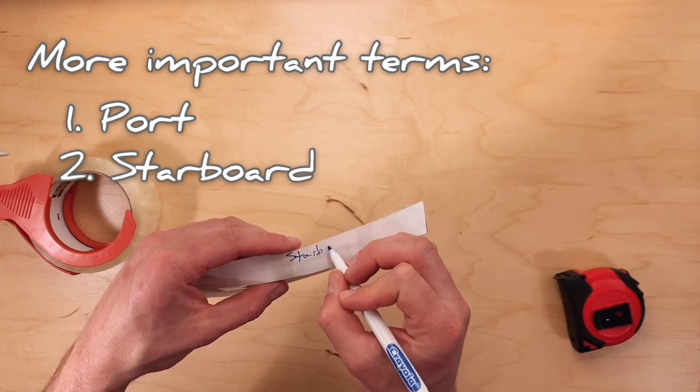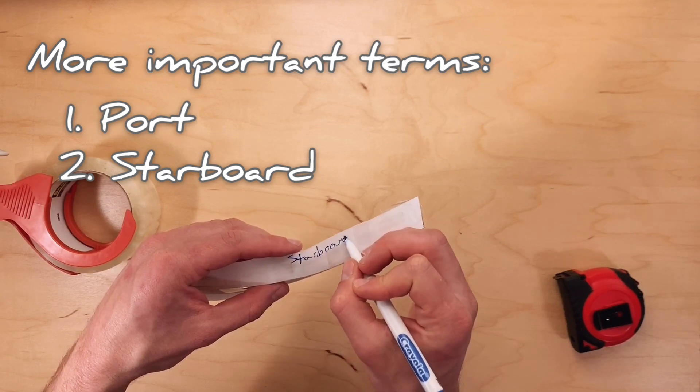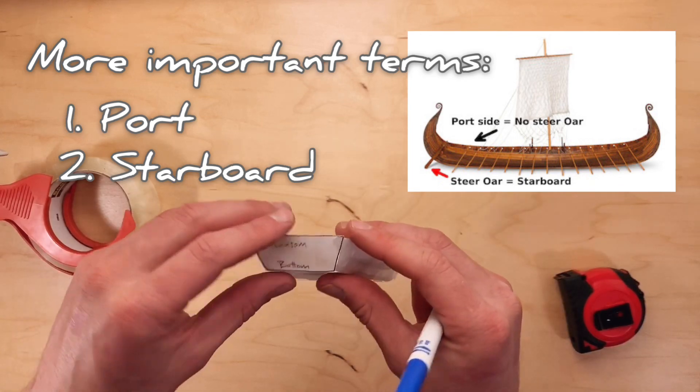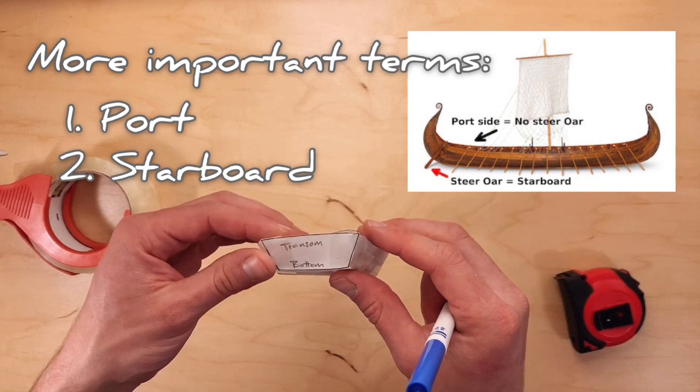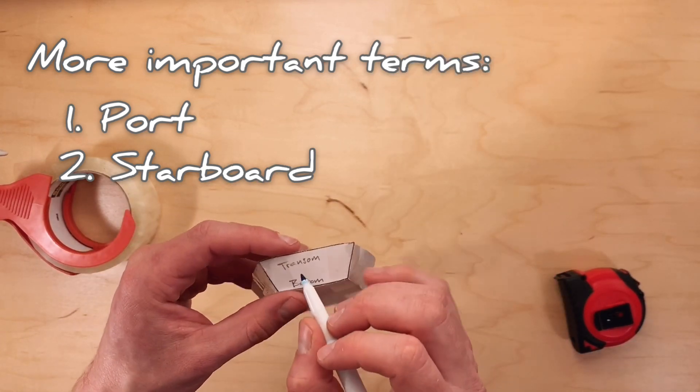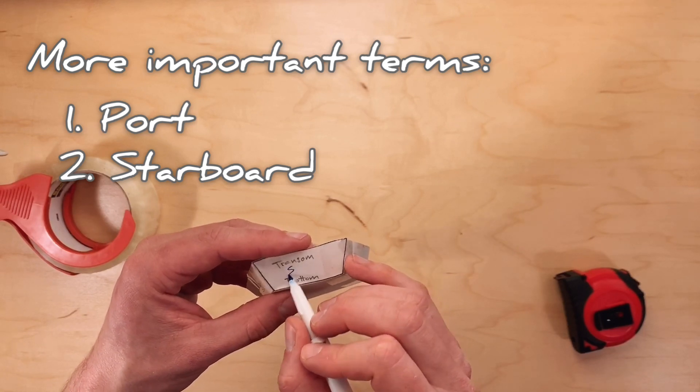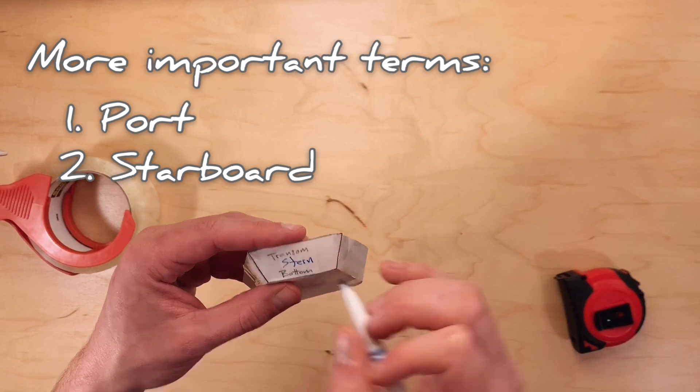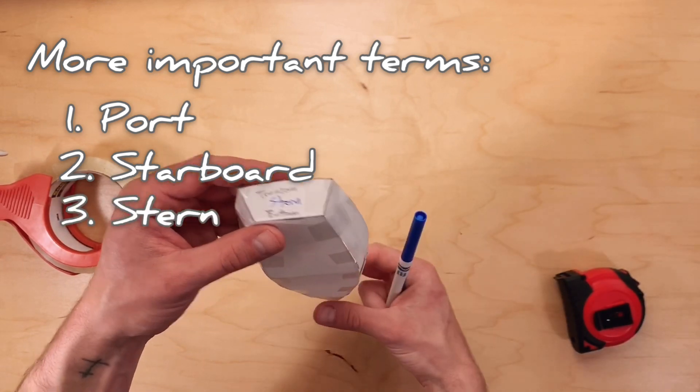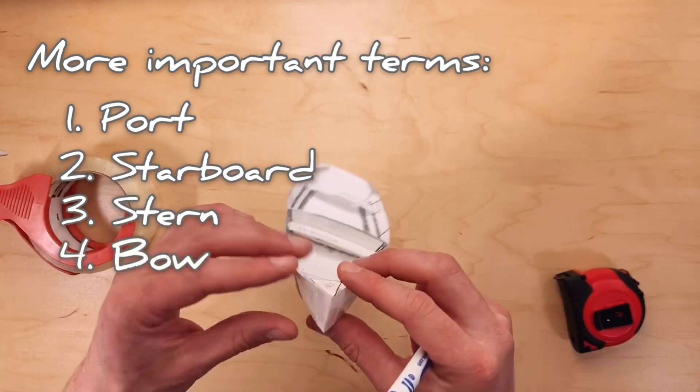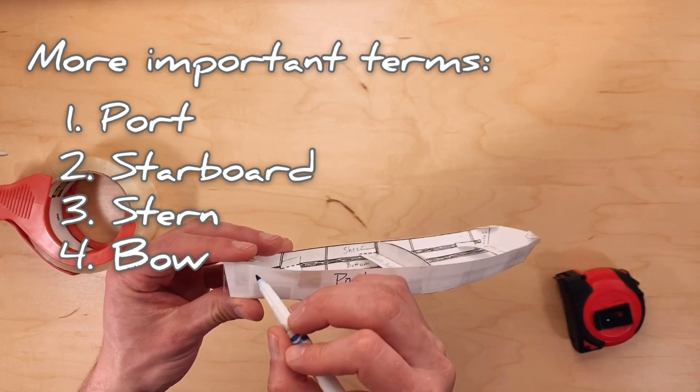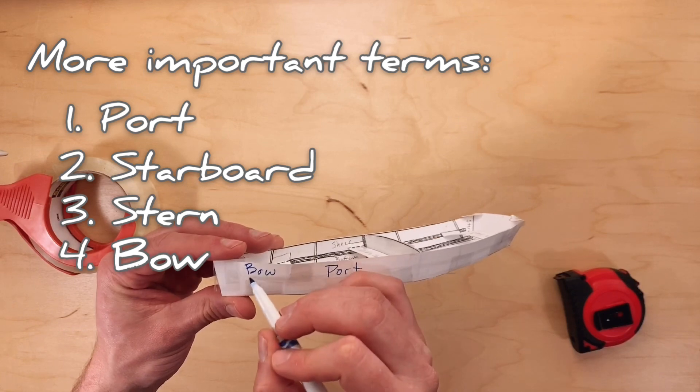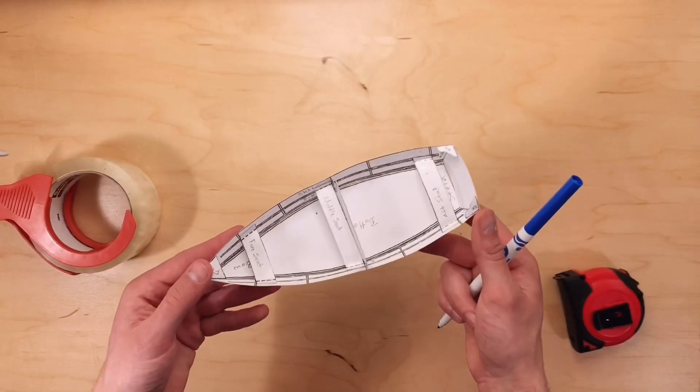This term comes from steerboard, which was an oar located on the right side of the ship to control the boat's direction. The term port came to describe the left side of the boat because that is the side that most boats would dock on to avoid the starboard, which was located on the right. I'm also labeling the stern and the bow, two terms that we've already talked about before. These four terms are universal in the boating world. You'll hear them used frequently when building boats and on the water.